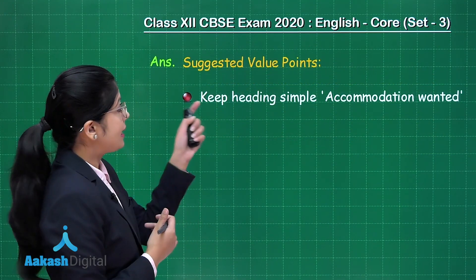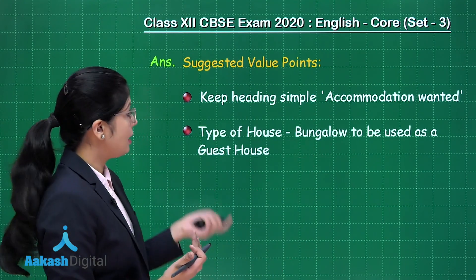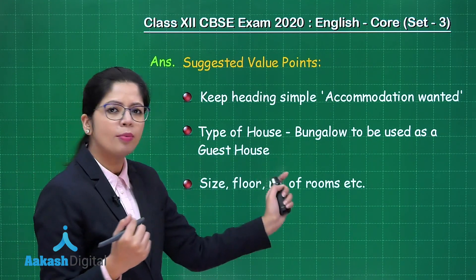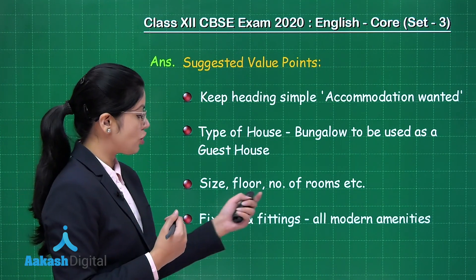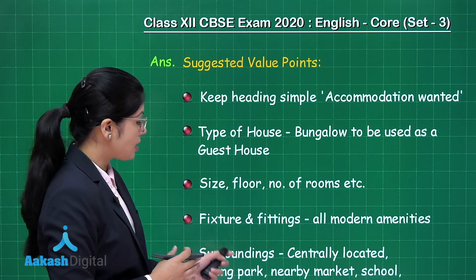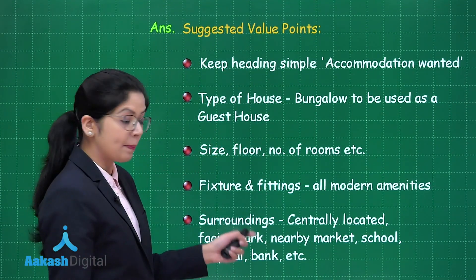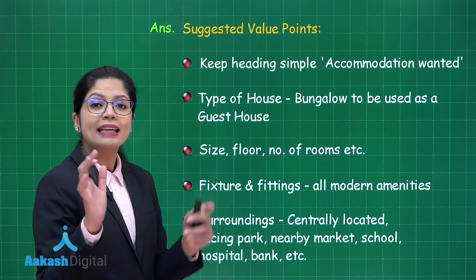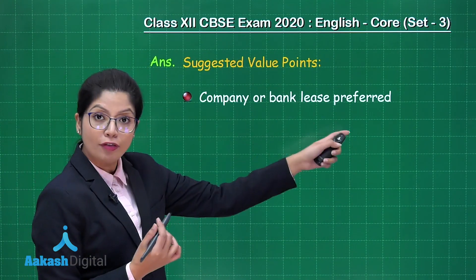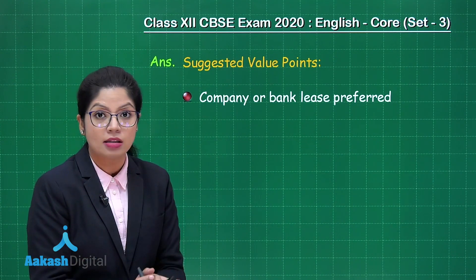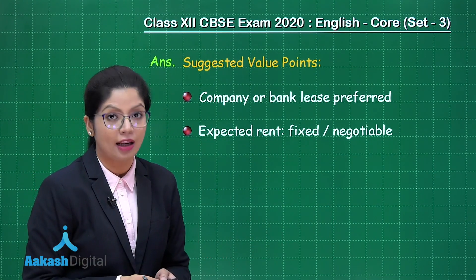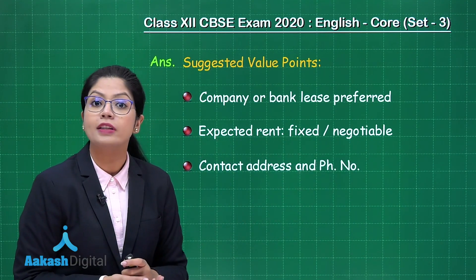The value points to keep in mind: keep the heading simple — in this case, 'Accommodation Wanted.' Mention the type of house: a bungalow to be used as a guest house. Size, floor, number of rooms, etc. have to be laid out. Fixture and fittings — all the modern amenities specified in the question — should be part of the advertisement. Surroundings such as centrally located, facing a park, nearby market, school, hospital, bank, etc. can be mentioned. Company or bank lease preferred is optional. Expected rent, either fixed or negotiable, has to be mentioned, followed by the contact address and phone number.